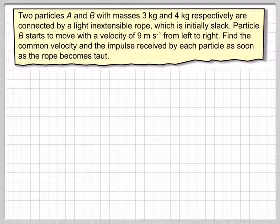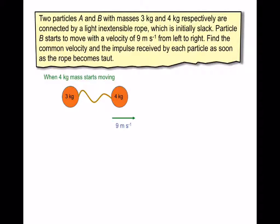It's a good idea to have a look at this as an animation to begin with. So here we have particle A, sorry, this is particle B, and this is when the 4kg mass starts moving at a velocity of 9 m per second.